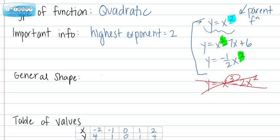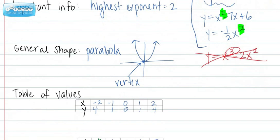The general shape of a quadratic function is called a parabola, and it's a u-shape. Each parabola contains a vertex, which is either the minimum or maximum point.